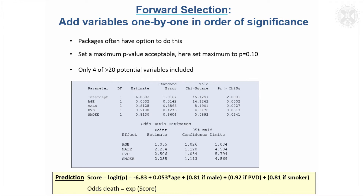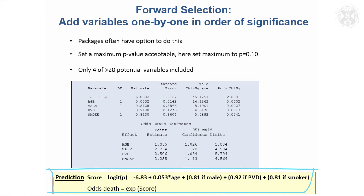Using forward selection on this dataset with a p-value limit of 0.01, only four of the 25 potential variables were included in the model. As it turned out, all four were statistically significant: age, gender, peripheral vascular disease — which remained significant even after adjusting for age and gender — and smoking. With these four variables we obtained what we might consider the best predictive model for this dataset, and the logistic regression equation came out with these coefficient estimates.